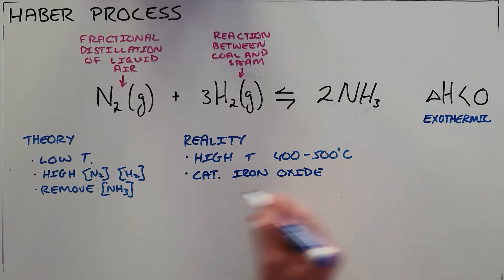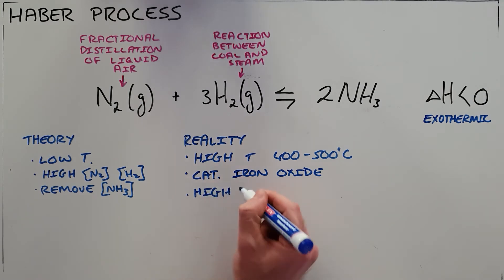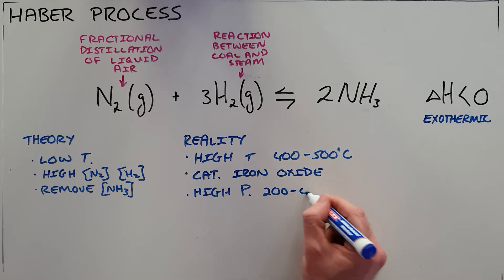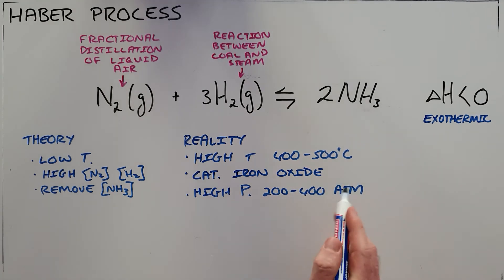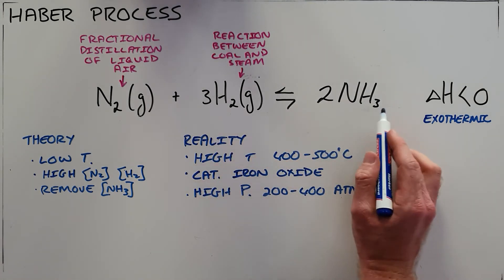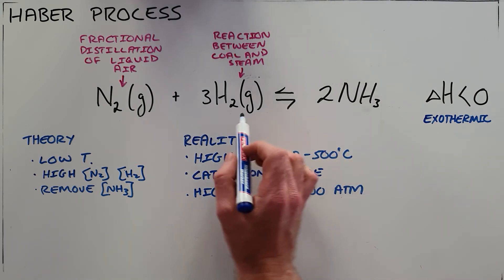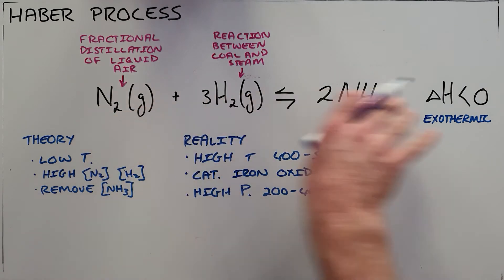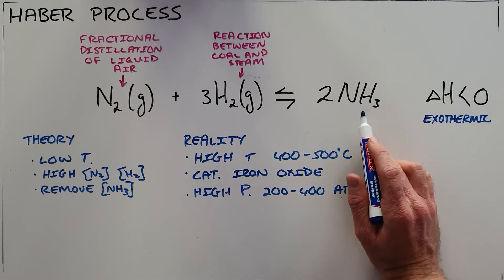The second change we would make is we would do this reaction at a very high pressure, normally somewhere between 200 and 400 atm. Because the forward reaction produces fewer molecules, only two molecules, whereas the reverse reaction produces four molecules, a high pressure would favor the forward reaction and produce more ammonia.